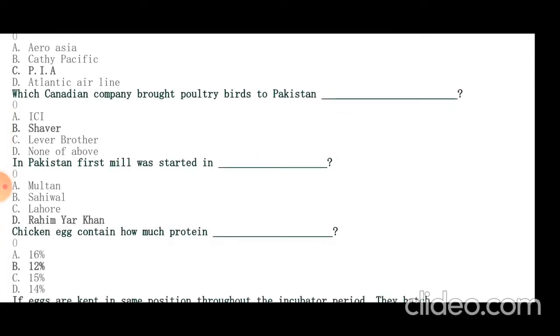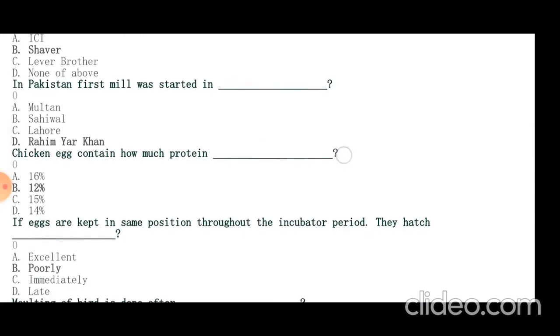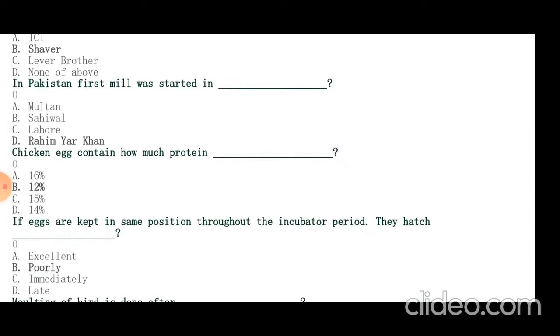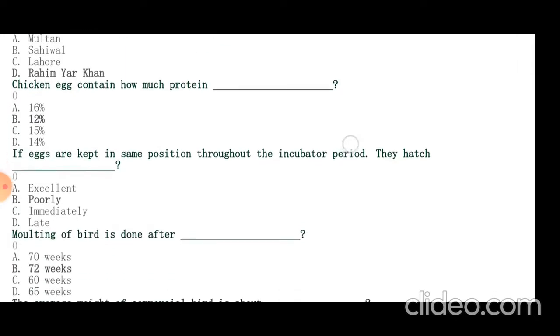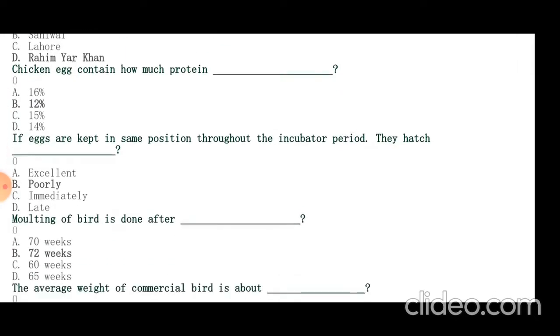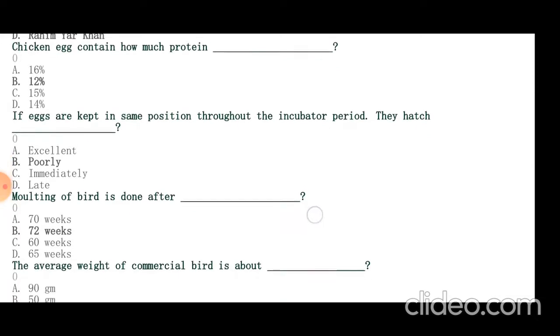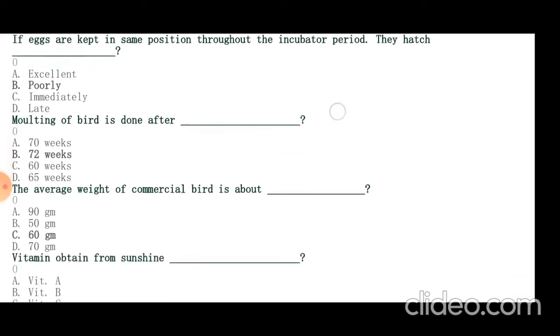Chicken egg contains 12% protein and protein requirement of poultry is approximately 18 to 22%. If eggs are kept in same position throughout incubation period, they hatch poorly. Molting of pullet is done after 72 weeks. The average weight of commercial pullet is about 60 grams.